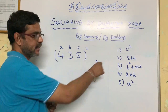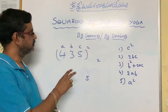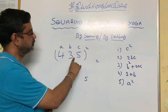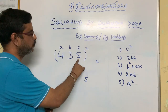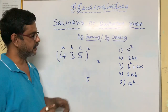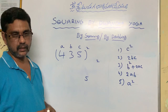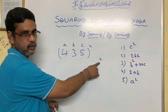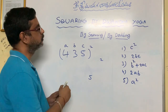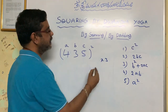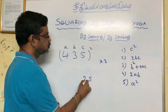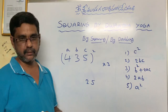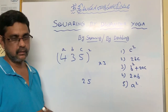Coming to Step 2: compute 2BC. First multiply B and C: 3 into 5 is 15. Then double it: double of 15 is 30. Add the carry-over number 2: 30 plus 2 is 32. So write 3 here and 2 here.